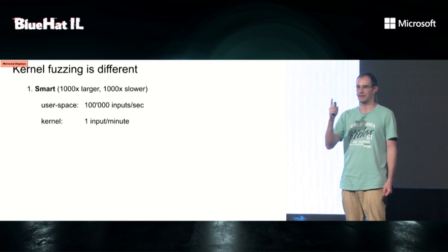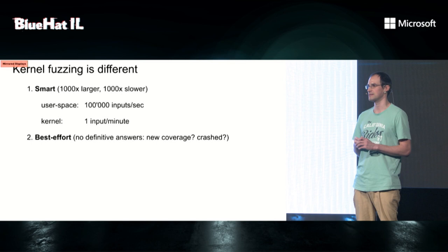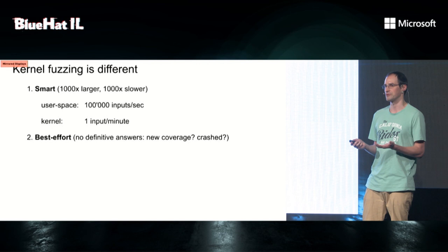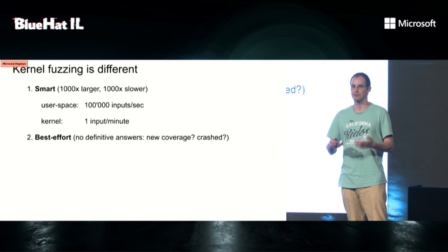The second key point is that the fuzzer needs to be best-effort, because you can't get definitive answers for almost anything — you can't reliably determine whether an input gives new coverage, whether it crashed, or whether a program reproduced the same crash. The fuzzer needs to operate in this uncertain context.